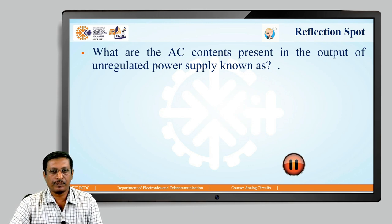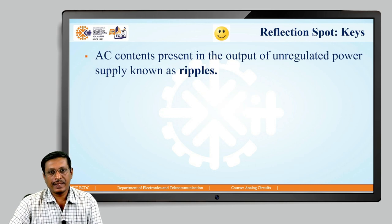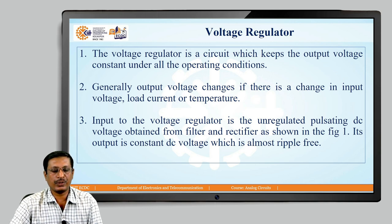Here is a reflection spot for you: what are the AC contents present in the output of an unregulated power supply known as? Pause the video and try to mention the answer. The AC contents present in the output of an unregulated power supply are known as ripples. So far we have seen that even after using a filter circuit, it is not possible to remove the entire portion of AC contents — that is, ripple; some ripple still exists.